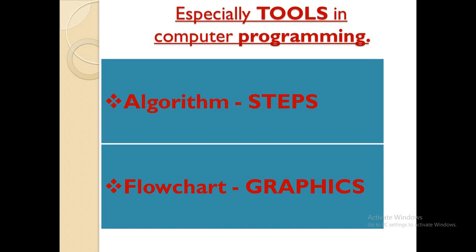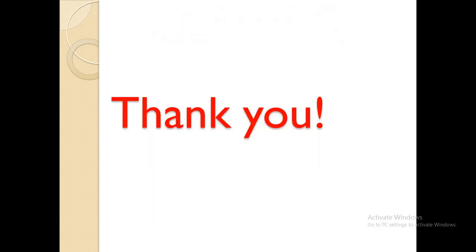There are two essential tools in computer programming: one is the algorithm, which means steps, and the other one is the flowchart, which is the graphical representation of the program. We're going to talk about these two in our next video. Thank you, make sure you subscribe and like.